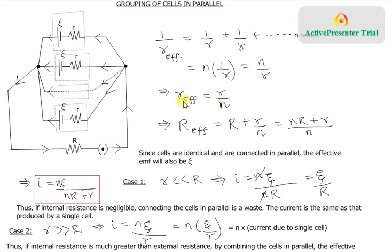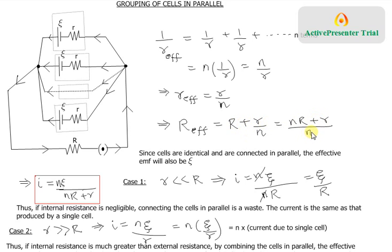The next step is to find the total resistance of this circuit. You have one external resistance R and the effective internal resistance r/n. These are in series, so the total effective resistance is R + r/n, which cross-multiplied gives (nR + r)/n.